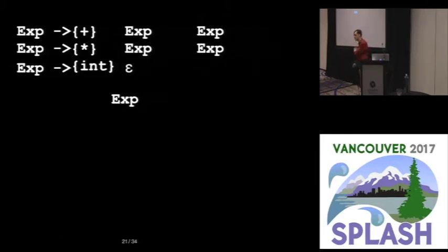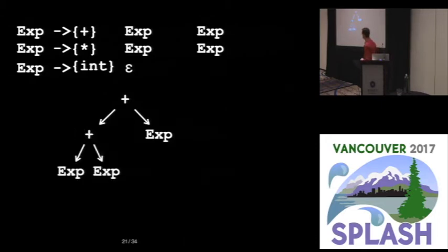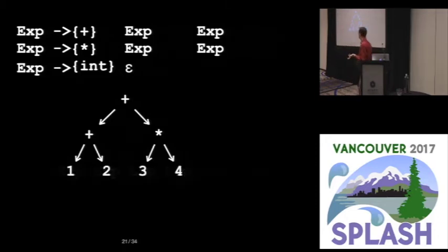So if I do that rewrite, I can apply the rewrite again to the left-hand tree. I can use the second rule in order to rewrite the right-hand expression. And then to finish things off, I'm just going to use the last one, the integer case, which the integer has nothing on its right-hand side, so these will not have any children.